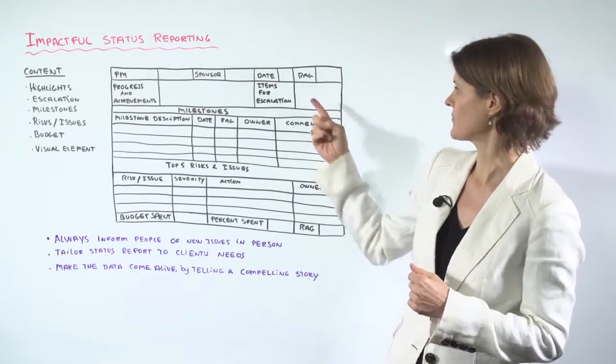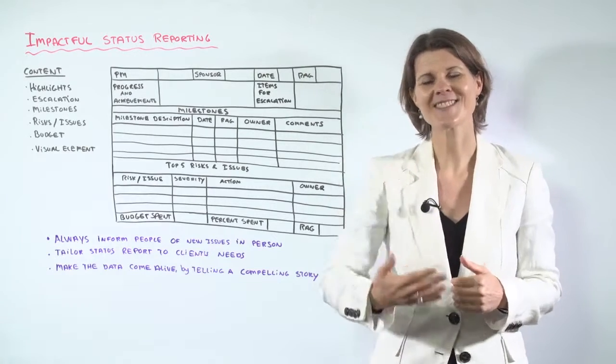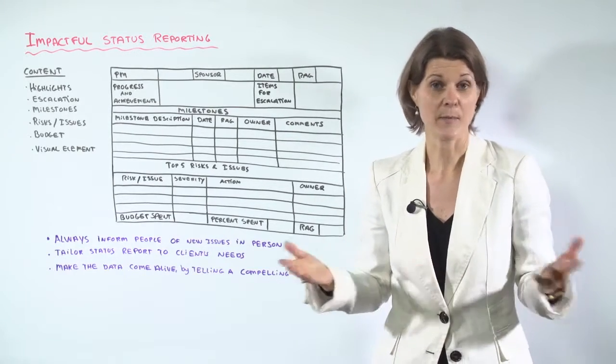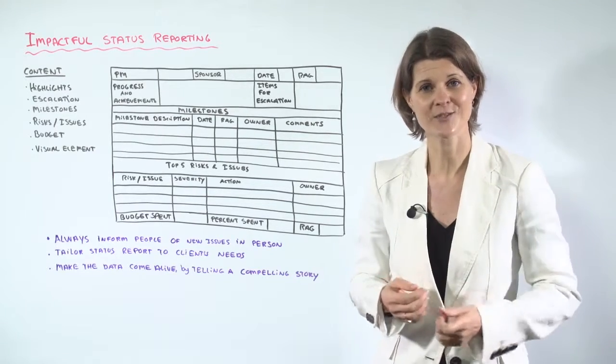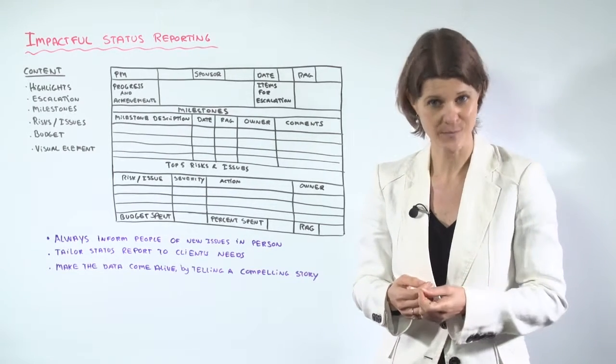And then here on the right, items for escalation. You see you have a senior audience. There may be senior executives reading your report. So why not take the opportunity to tell them what you are waiting for from them.